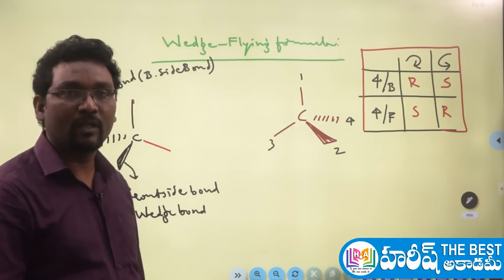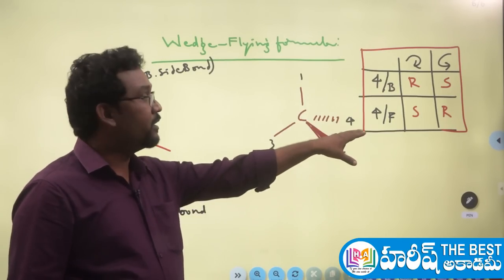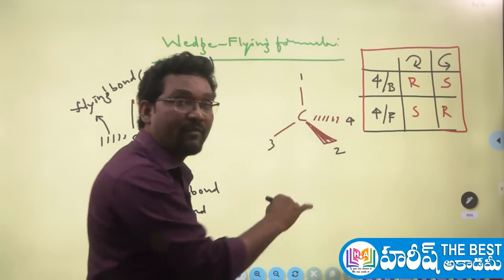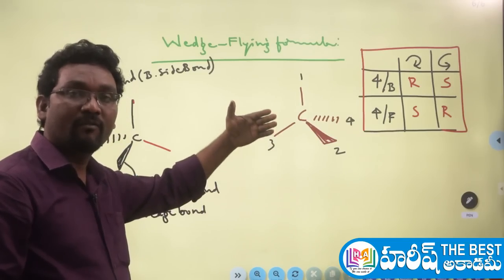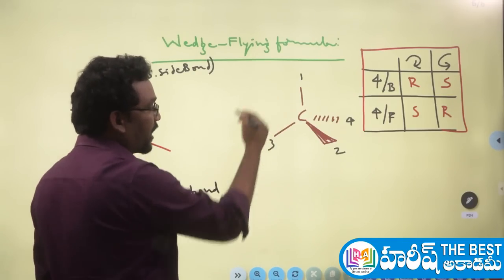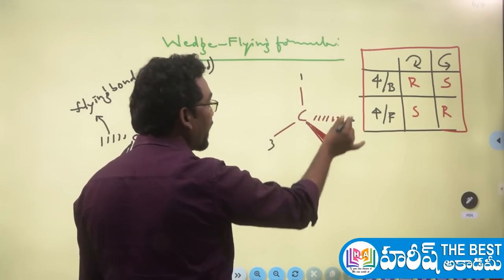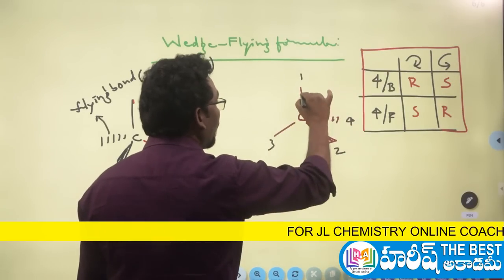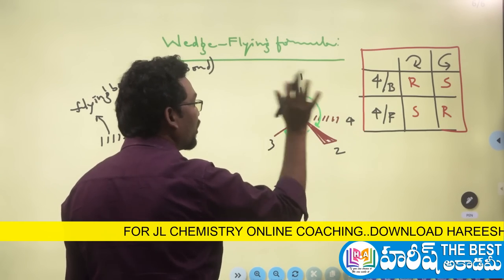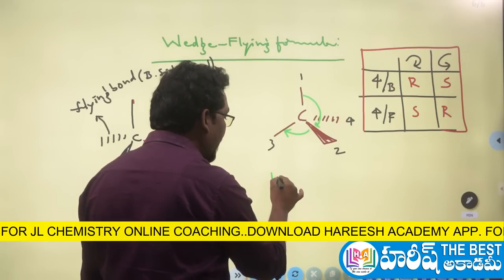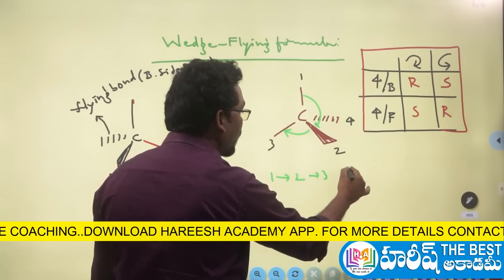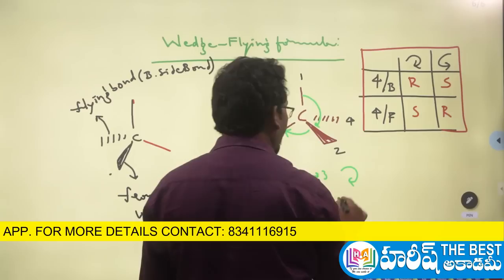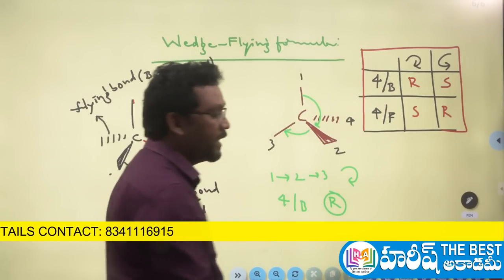Applying to an example: after giving priorities and viewing from 1st to 2nd to 3rd, the eye direction rotates clockwise. The 4th priority group is on the back-side bond. By the 4/B rule, clockwise = R configuration. So this carbon has R configuration.